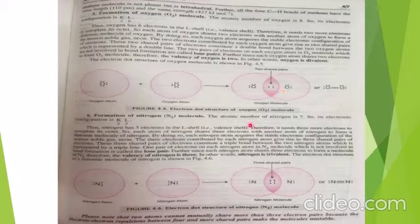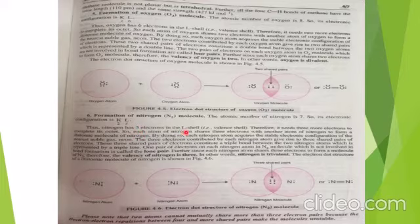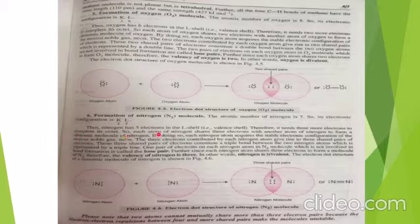The atomic number of nitrogen is 7, so its electronic configuration is 2, 5. Thus nitrogen has five electrons in its L shell, which is the valence shell. Therefore it needs three more electrons to complete its octet. Each atom of nitrogen shares three electrons with the other nitrogen atom to form a diatomic molecule of nitrogen.